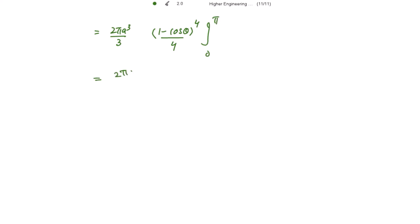Equal to 2 pi a cube over 12 and what is cos of pi? It is negative 1. So it becomes 2 to the power 4 minus and what is cos of 0? It is 1. So this will go.